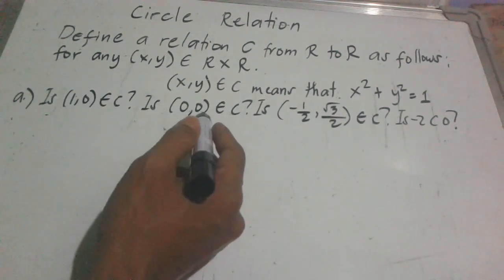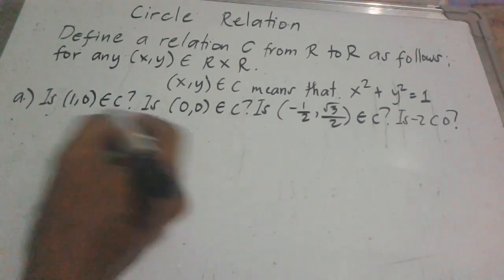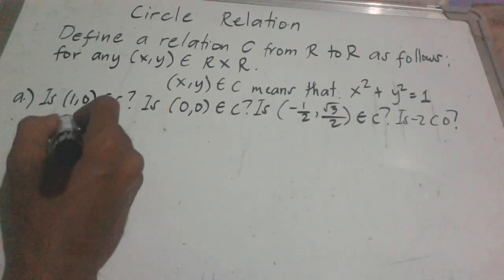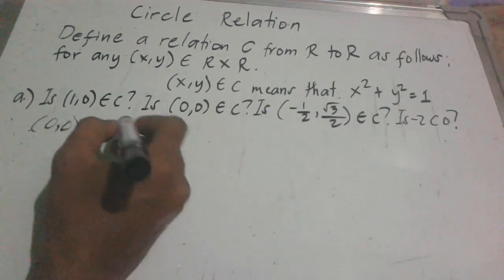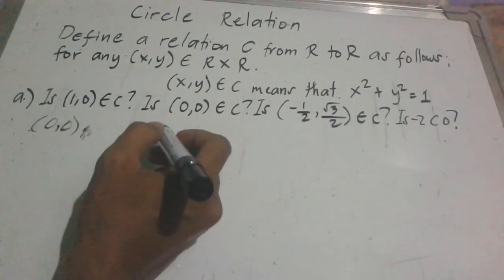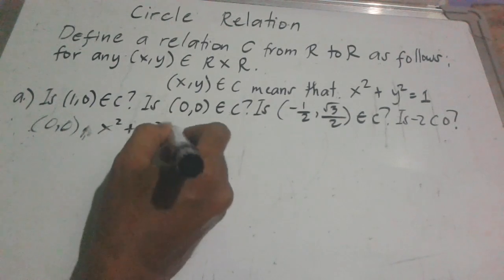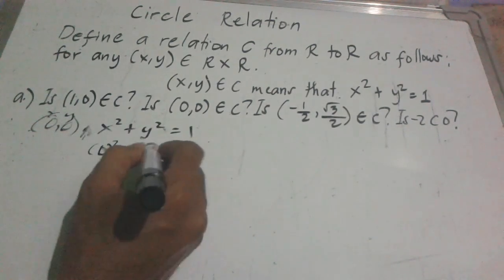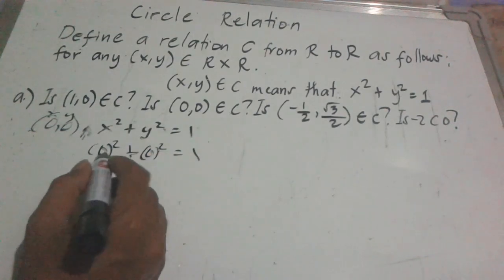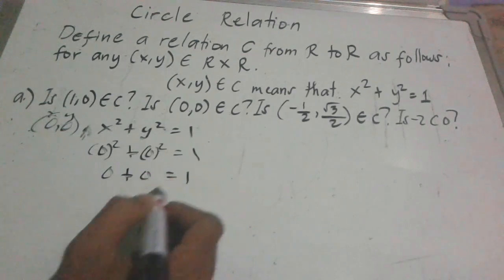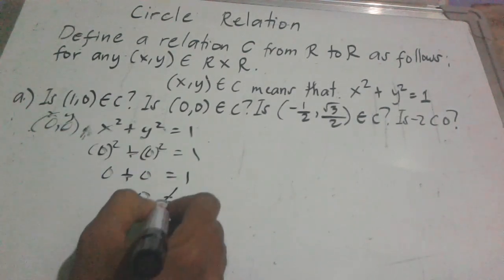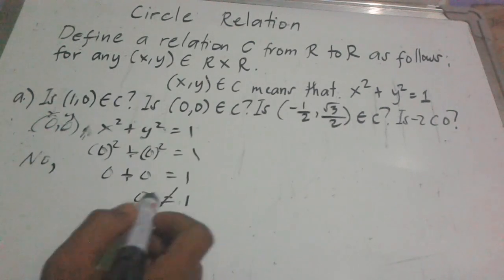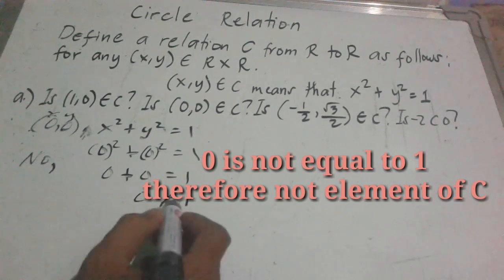Now let's try (0, 0). Is it an element of C? Substituting: 0 squared plus 0 squared equals 1, which gives 0 plus 0 equals 0, and 0 is not equal to 1. Therefore, (0, 0) is not an element of C. No.